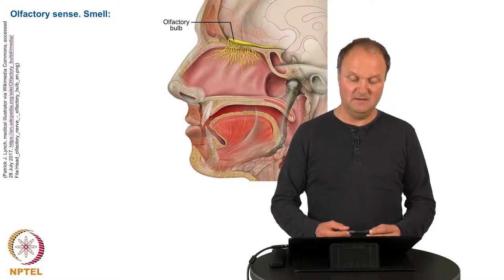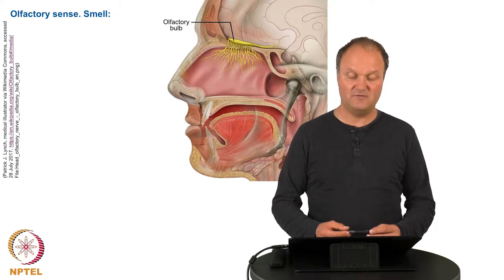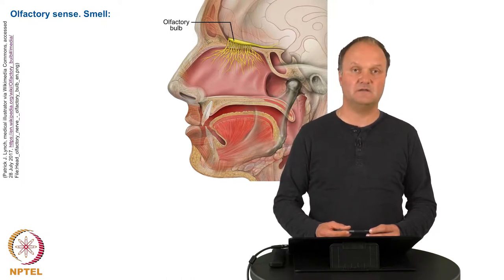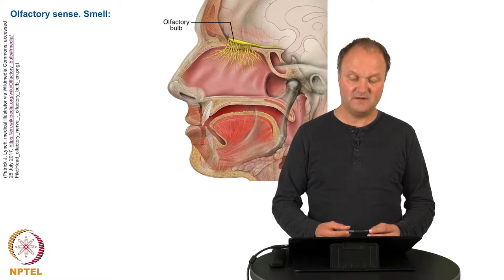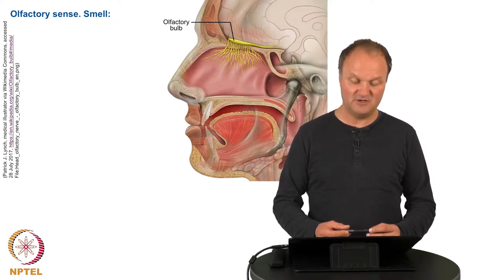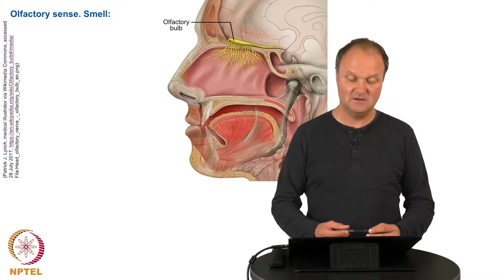In this membrane there are approximately 350 to 400 different receptors which respond to different classes of flavor. These receptors then forward nerve impulses through the so-called bulbus olfactorius, the olfactory bulb — which you see in the picture — to the cortical centers.